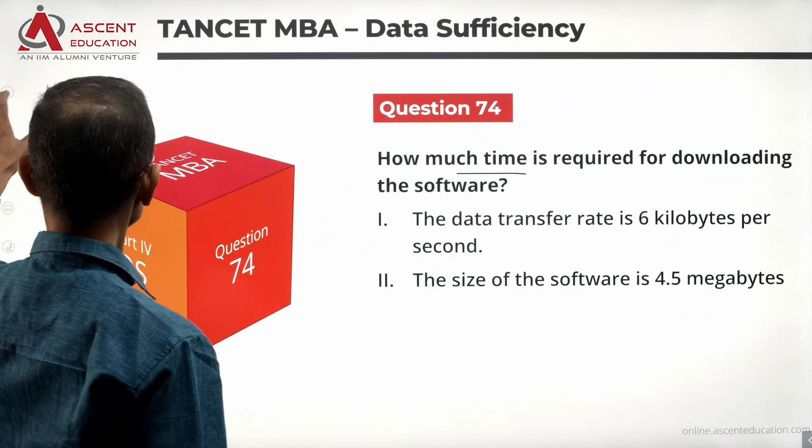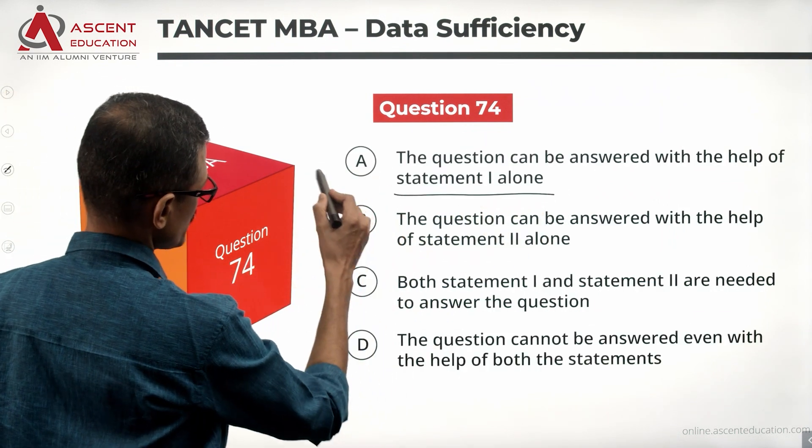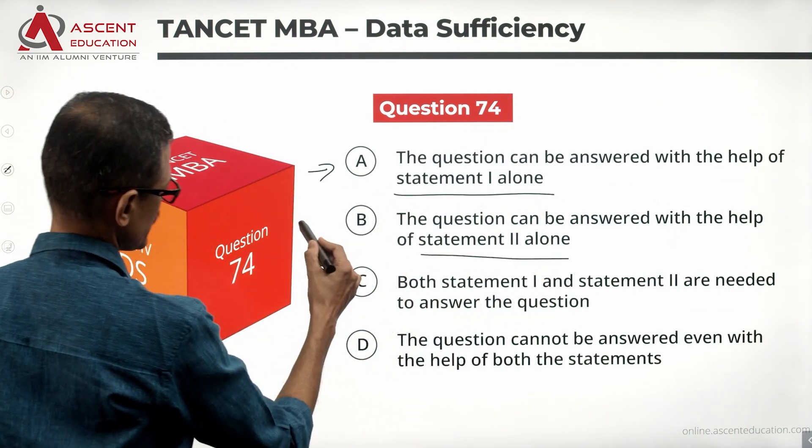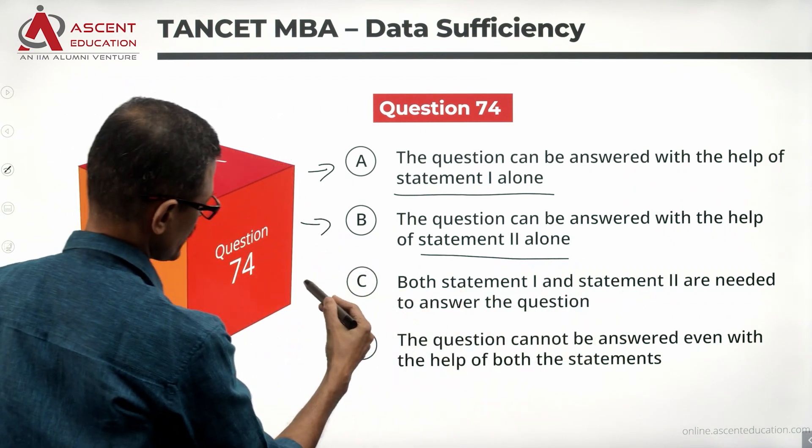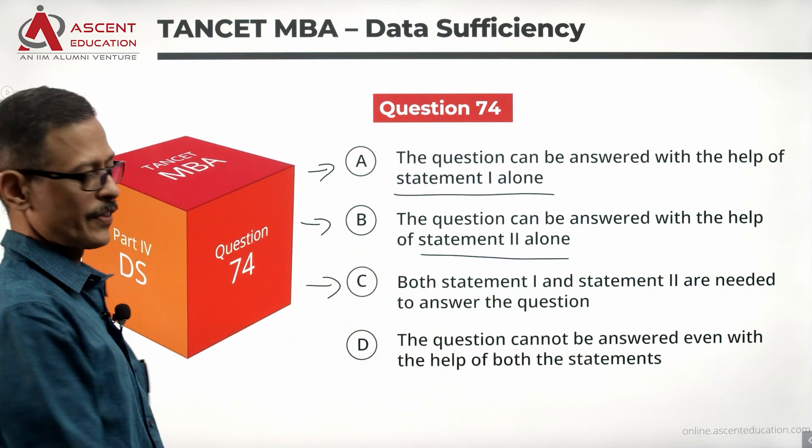Take a look at the statements and answer options. Statement one alone is sufficient, it's A. Two alone is sufficient, it's B. Together they are sufficient, it's C. Data is insufficient, then it is D.